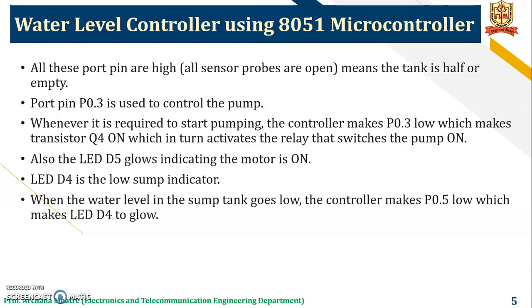When all port pins are high and all sensor probes are open, that means the tank is empty. Port pin P0.3 is used to control the pump. Whenever it is required to start pumping, the microcontroller makes P0.3 low, which makes transistor Q4 turn on, which in turn activates the relay that switches the pump on. LED D5 glows indicating the motor is on. LED D4 is the low sump indicator; when the water level in the sump tank goes low, the microcontroller makes P0.5 low, which makes LED D4 glow.